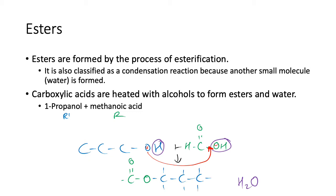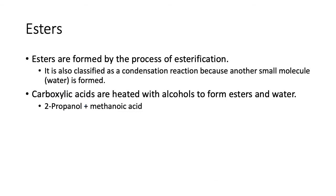Propyl for the R' group — formed from propanol and methanolic acid. That was fairly easy with a primary alcohol. Now we're going to have a look at what it looks like with a secondary alcohol, which will make things a little bit different.